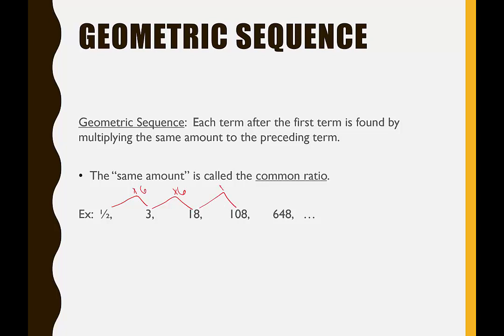To get from 108 to 648, I could multiply by six. So I could presumably find the next term in the sequence by taking 648 and multiplying it by six. This six is the common ratio. That is our common ratio.